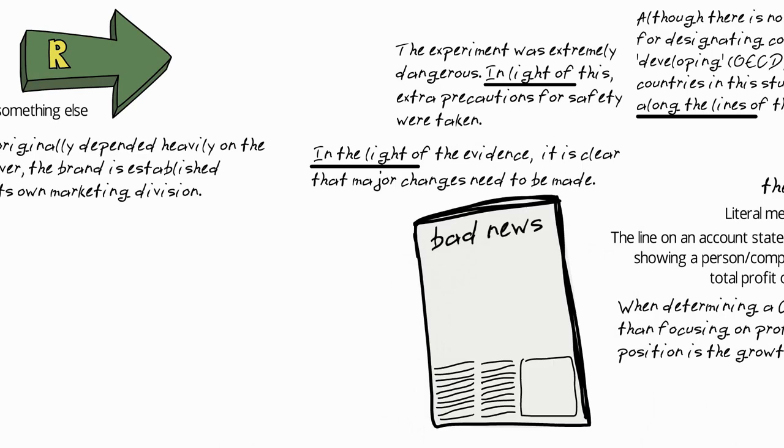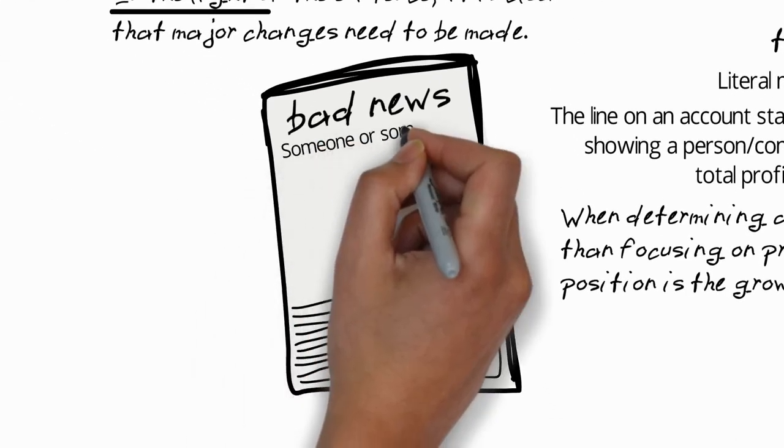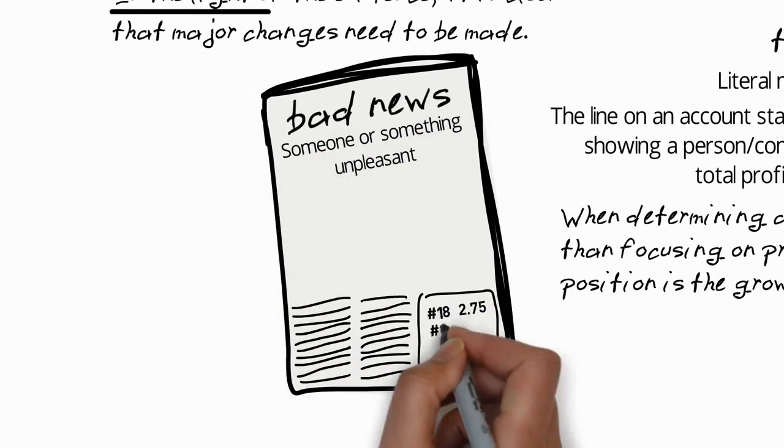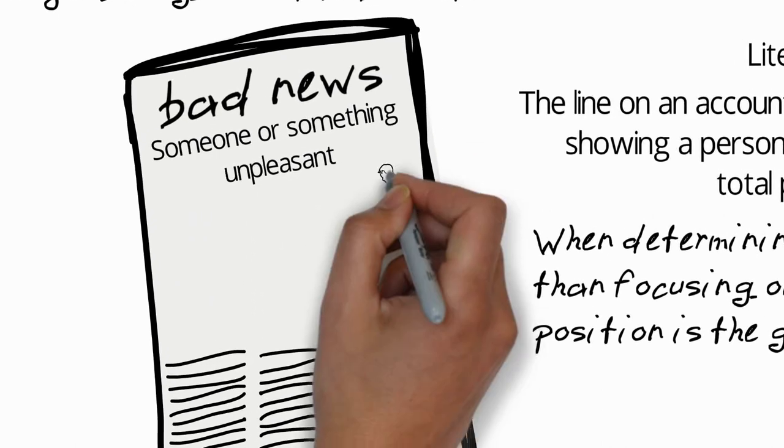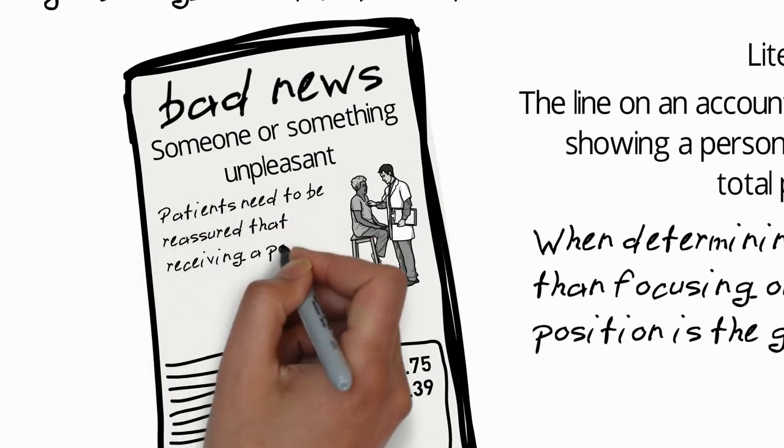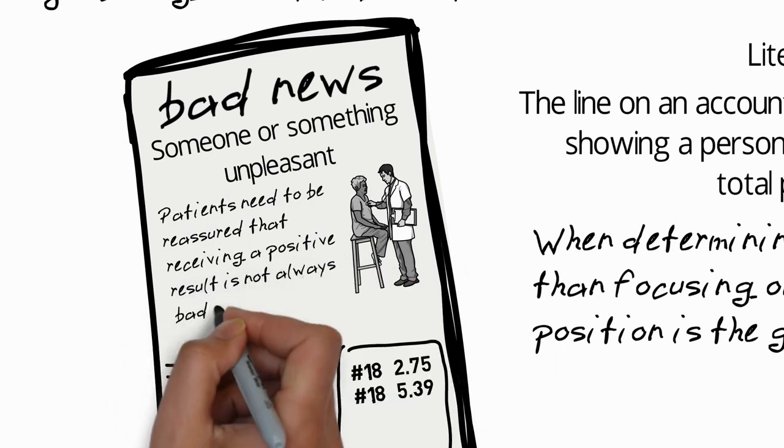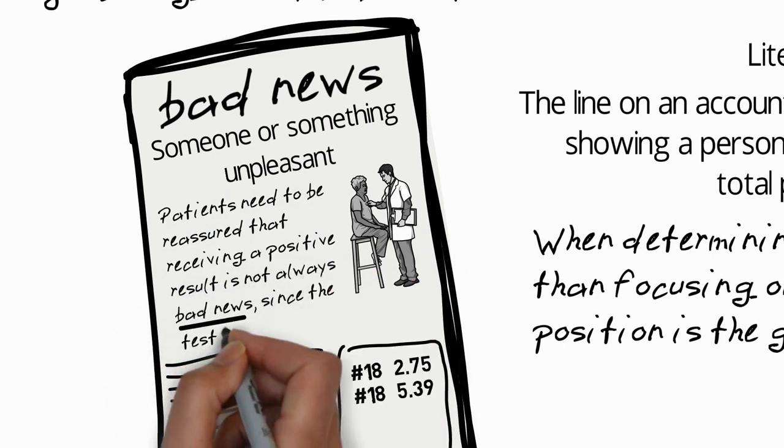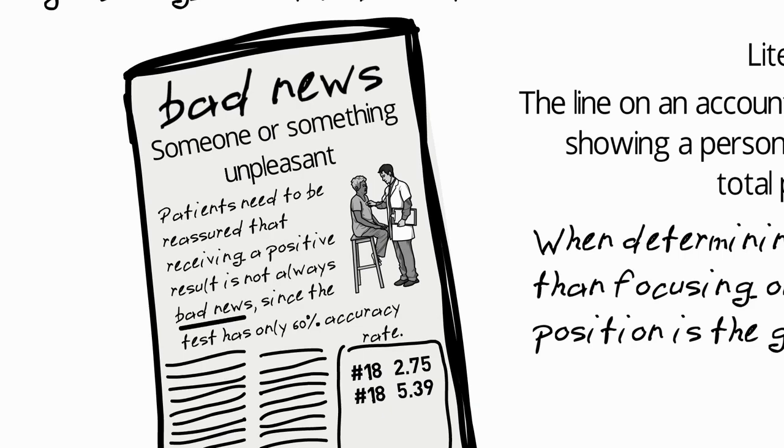The next idiom is bad news, and this means someone or something unpleasant. This idiom ranks 18th in both writing and speaking. An example sentence: patients need to be reassured that receiving a positive result is not always bad news, since the test has only 60% accuracy rate.